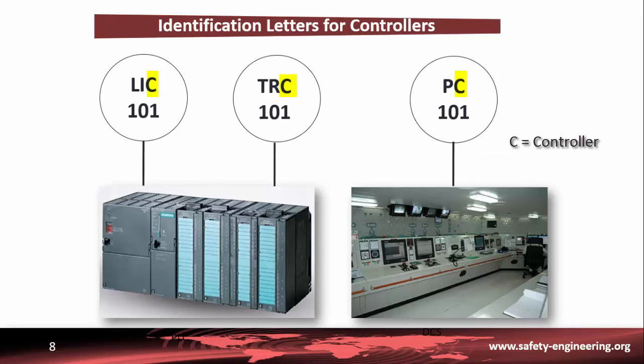When the second or third letter is C, the associated device is a controller. A controller is a device that receives data from a measurement instrument, compares that data to a programmed set point, and sends a corrective signal to an actuator. Local controllers are usually one of three types: pneumatic, electronic, or programmable.